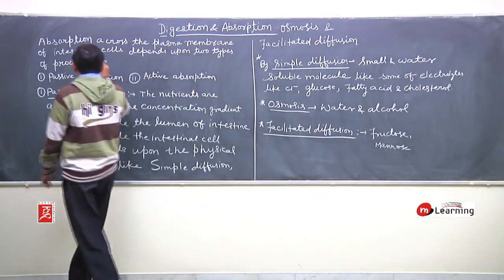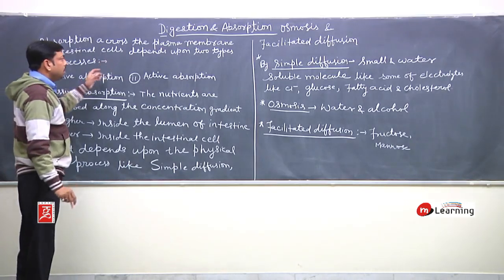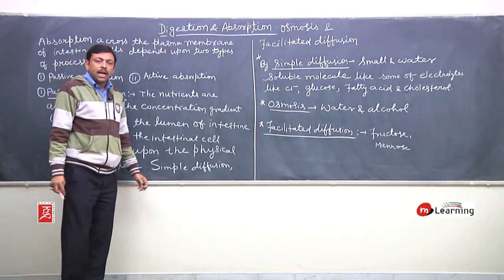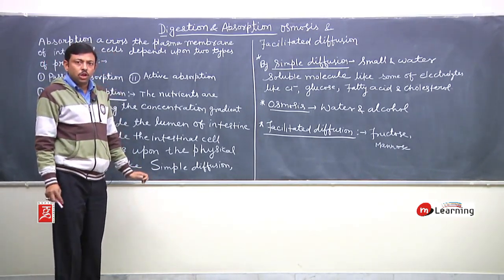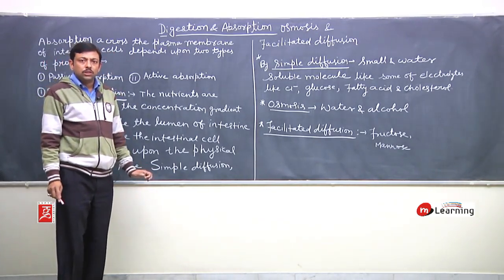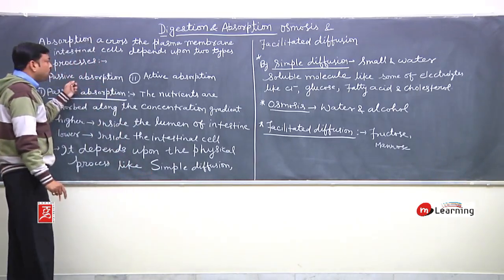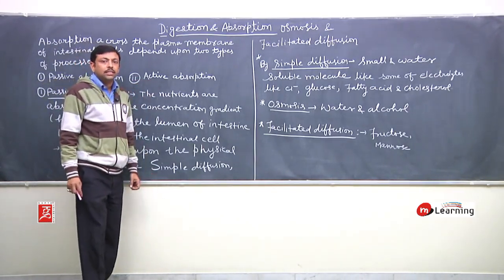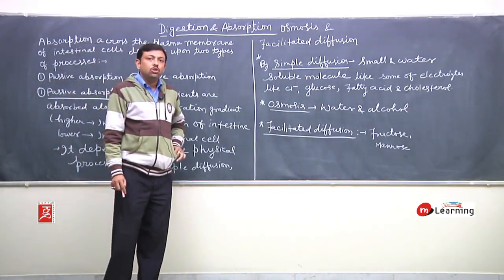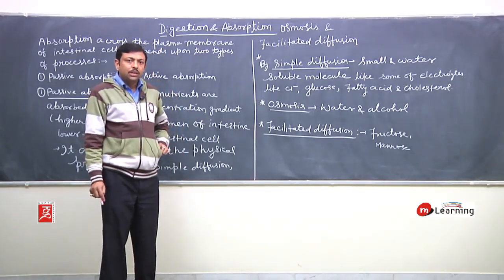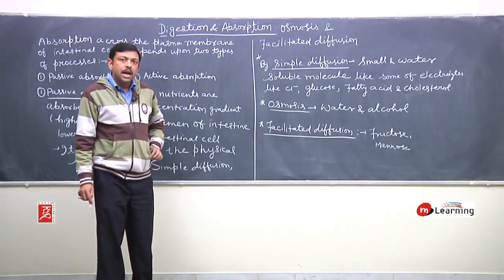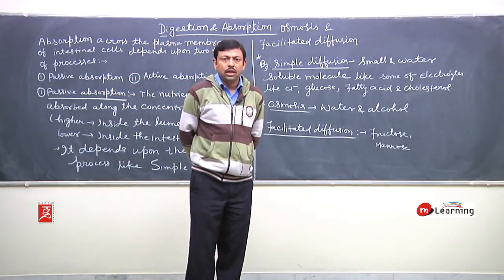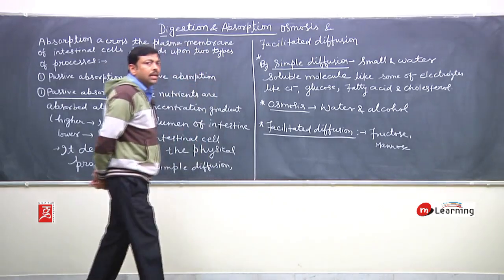Absorption across the plasma membrane of the intestinal cell depends upon two types of processes. One is the passive process and the second is the active process. Some of the absorption is active and some is passive. In the passive process there is no expenditure of energy.